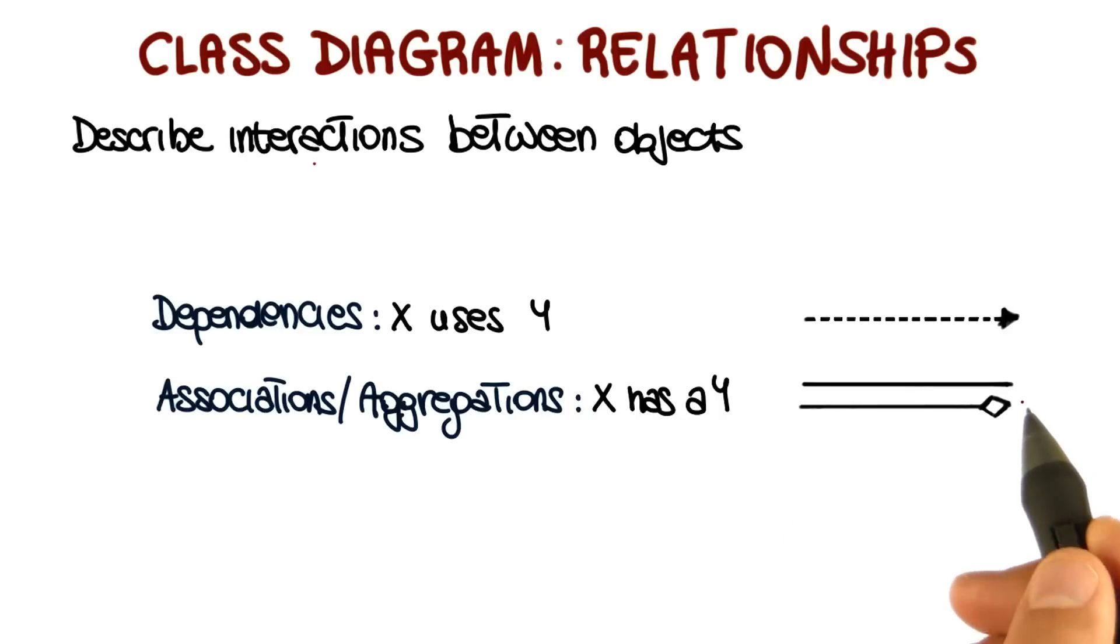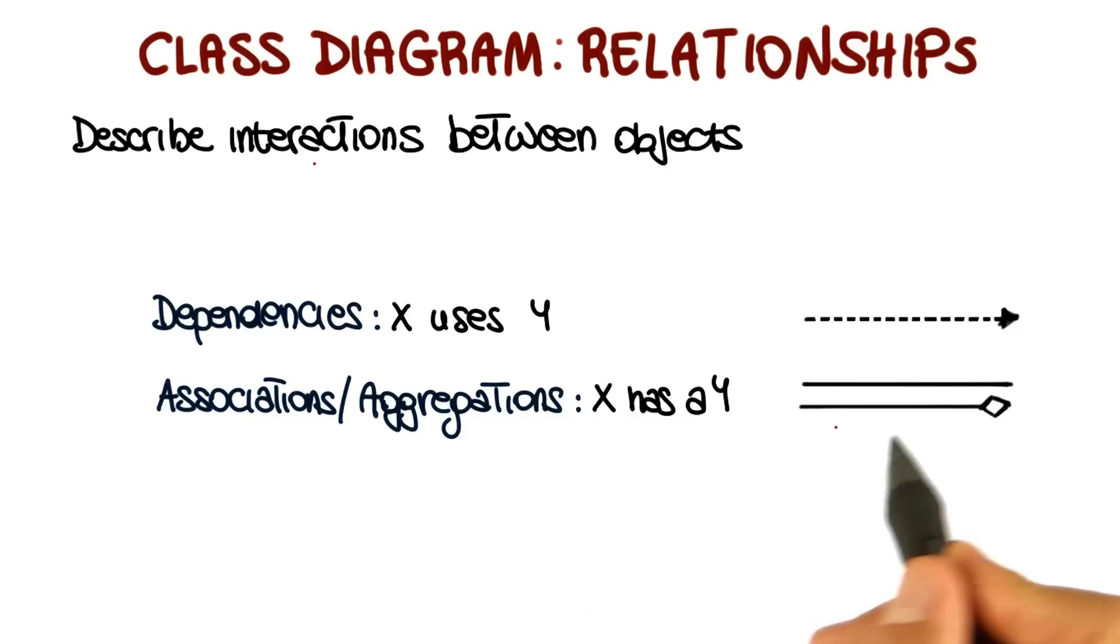And if it is an association, we indicate it with a solid undirected line. If it's an aggregation, we indicate it in the same way but with a diamond at one of the ends.